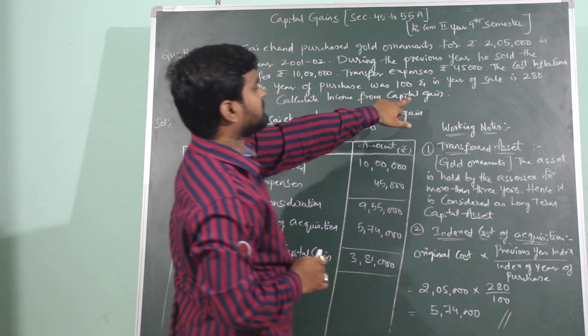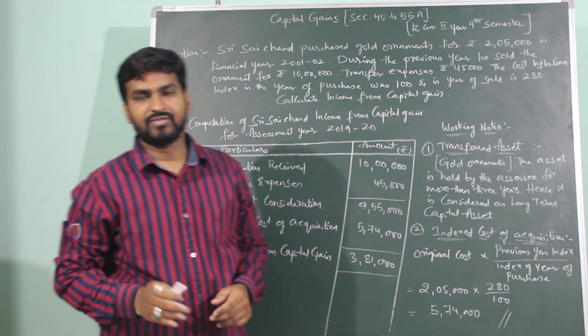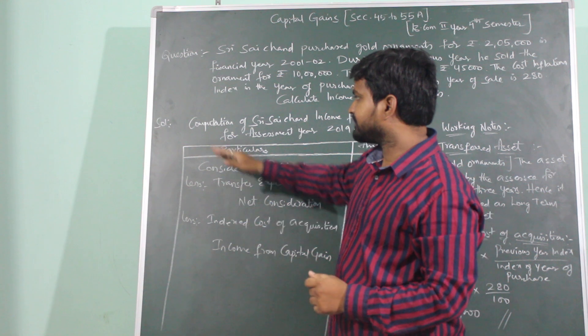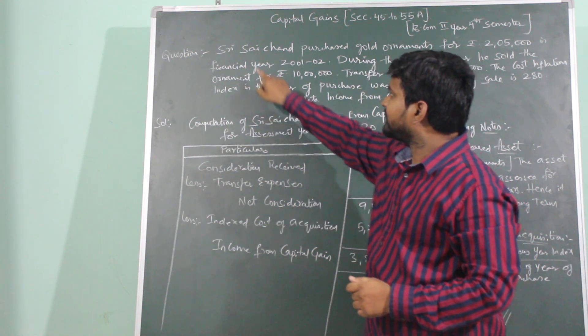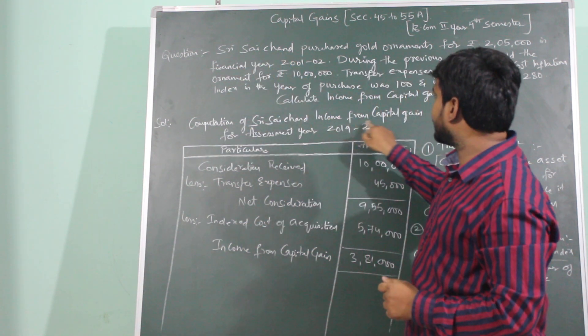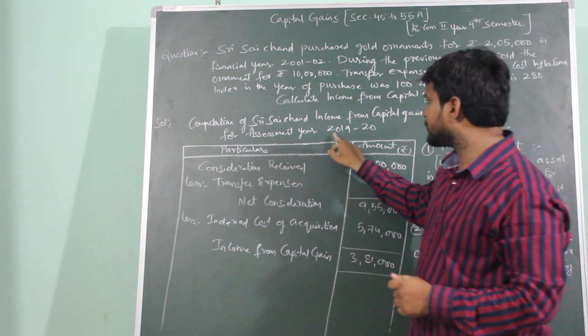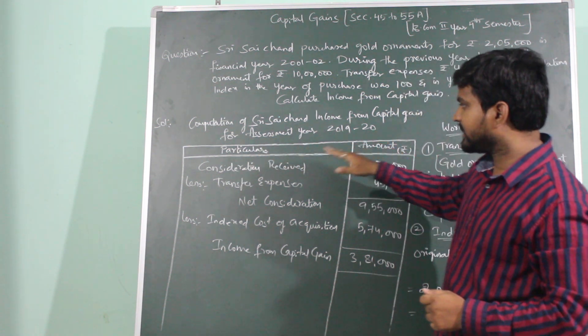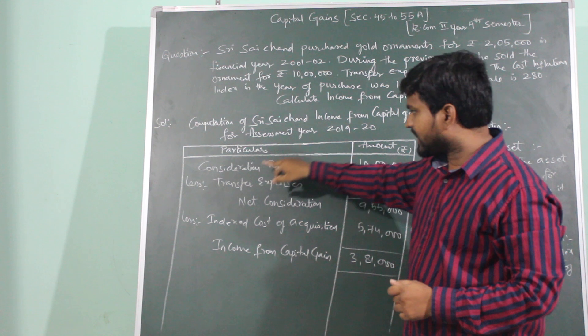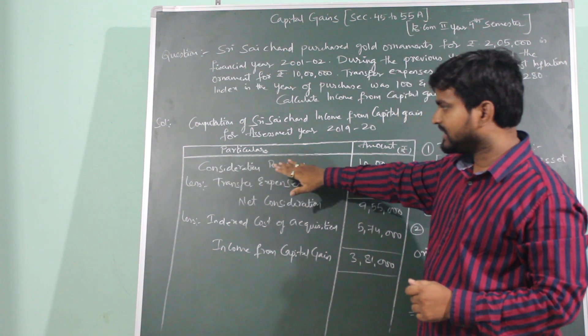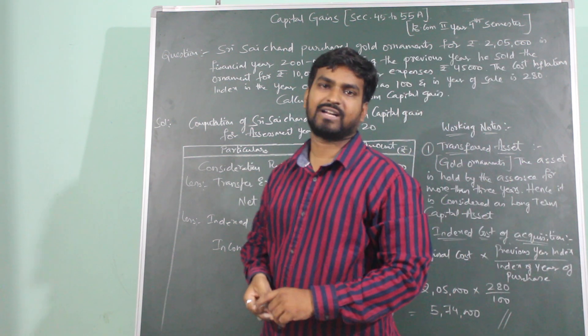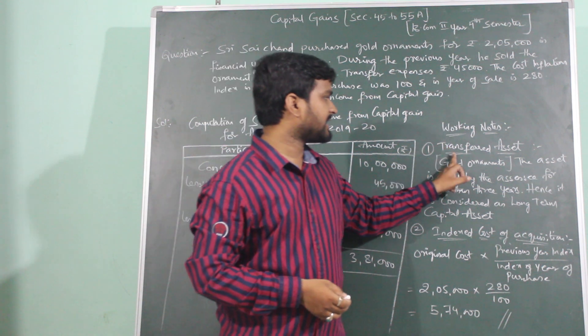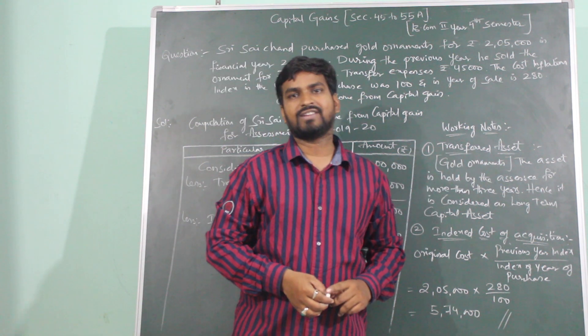Calculate income from capital gain. This was the question, let us now proceed with the solution. Heading: Computation of Shri Sai Chan income from capital gain for assessment year 2019-2020. Particulars, amount. Working notes: Transferred asset - Shri Sai Chan sold gold ornament.